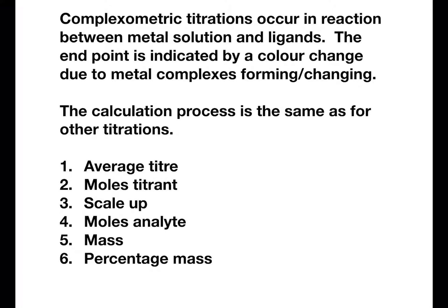Step one is always to calculate your average titer. From this you can find your moles of titrant, and in general you're then scaling up to a solution within a standard flask. From there you can find your moles of your analyte and then potentially your mass and percentage mass. This is the process that we're going to be following today for the examples that we'll work through together and the examples that you can try.